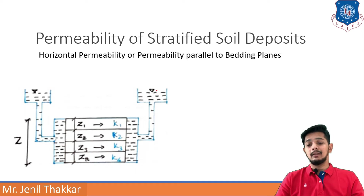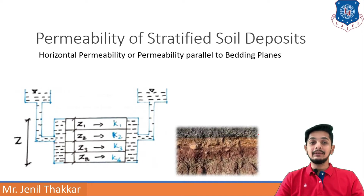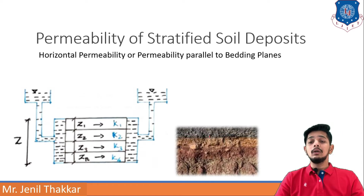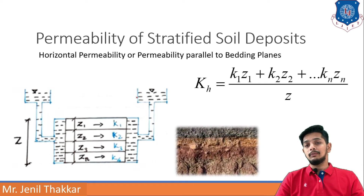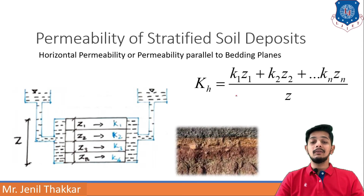For horizontal permeability, flow passes horizontally and the formula for the coefficient of permeability is: kh = (k1·z1 + k2·z2 + k3·z3 + ... + kn·zn) / Z, where Z is the total depth of all layers. Each term k1·z1 corresponds to its respective layer. This is how horizontal permeability of stratified soil is calculated.